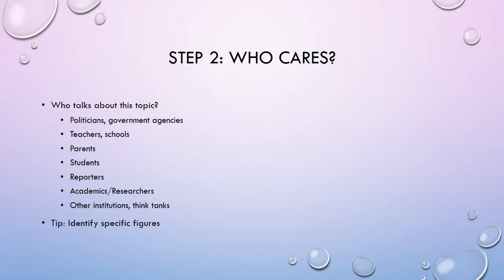Step two is you want to think about who cares about this subject, who's invested in it, who's interested in it, who is affected by it. So we have politicians, government agencies, teachers and schools — who are of course interested in education — parents, students, reporters, academics and researchers. There might be other institutions and think tanks. Now I've given very general ones here, but when you start doing this in your research, you want to try to identify specific figures, such as particular politicians like the secretary of education.